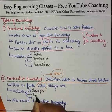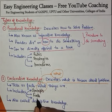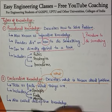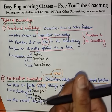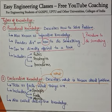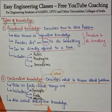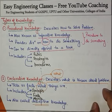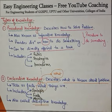Declarative knowledge includes facts and objects. Whatever concept about an object there is, what its fact is — all of that is stored in it. It is also known as descriptive knowledge, just as procedural is also called imperative knowledge.